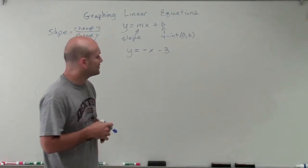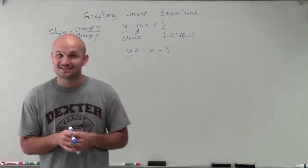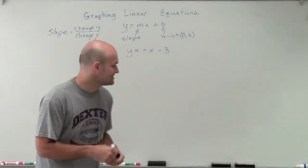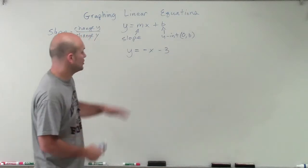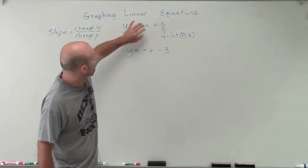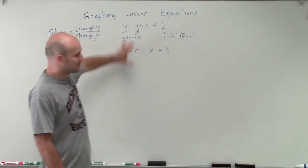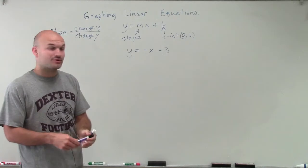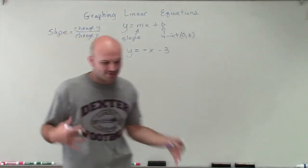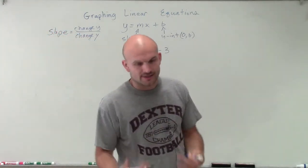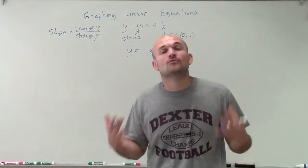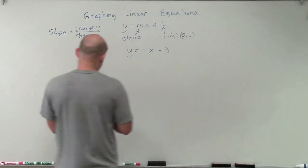What I have here is y equals negative x minus 3. I like this one a lot because now we need to determine the slope. So I've written in what the slope is, what the y-intercept is, and how we're going to plot those. When I'm given a linear equation in slope-intercept form, I like to write out what we have as our slope.